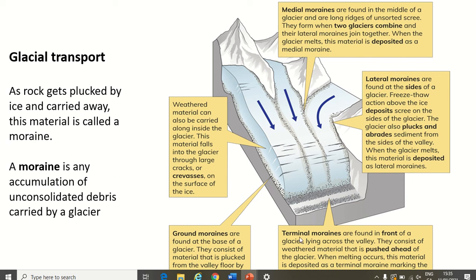The final moraine is a terminal moraine. The word terminal means to end — terminate, end. Terminal moraines are found at the front or the end of the glacier, lying across the front. They consist of weathered material that is pushed ahead of the glacier. When the glacier melts, these terminal moraines will form something — we're going to look at what that is in the next couple of lessons.